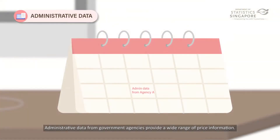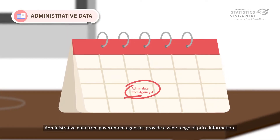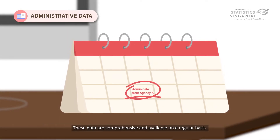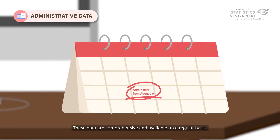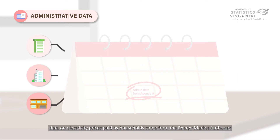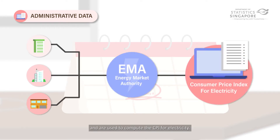Administrative data from government agencies provide a wide range of price information. These data are comprehensive and available on a regular basis. For example, data on electricity prices paid by households come from the Energy Market Authority and are used to compute the CPI for electricity.